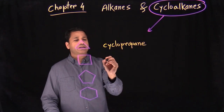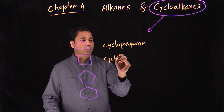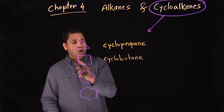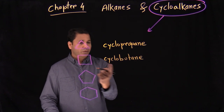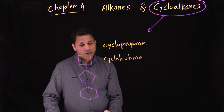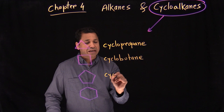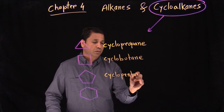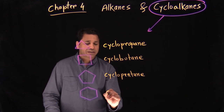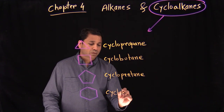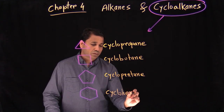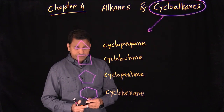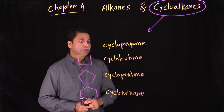Four carbons becomes cyclobutane. You just count the carbons and since it's a ring, you write cyclo in front of it. So that will be cyclopentane, and the next one is cyclohexane. These are the different cycloalkanes.